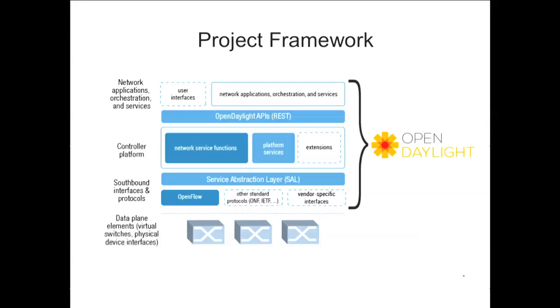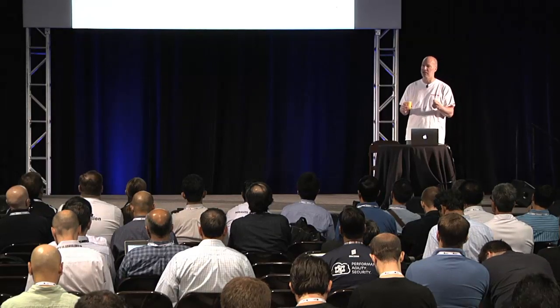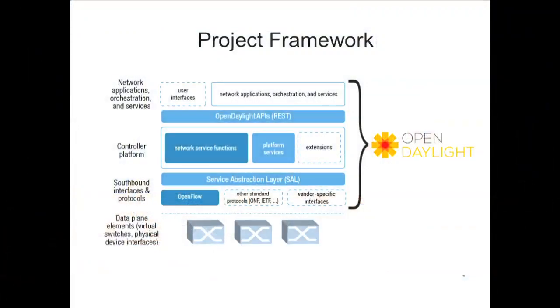The controller itself has network services inside it — topology management and things like that — that everybody needs for networking, and platform services like plug-in managers. On the southbound, there's a Service Abstraction Layer called SAL. There are actually two: the hard-coded SAL, and the MD-SAL or model-driven SAL. The MD-SAL uses Yang models to describe the southbound and generates code linking REST APIs to southbound plug-ins using code generation based on Yang — fully modular, but also complicated. Southbound plug-ins include OpenFlow, I2RS in the fullness of time, and things like that.